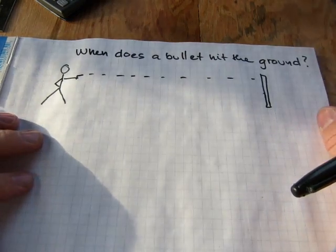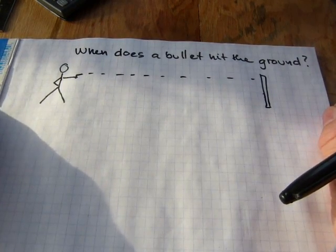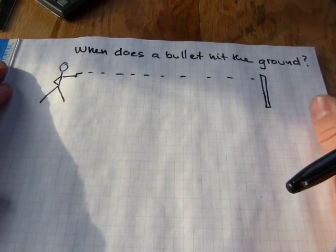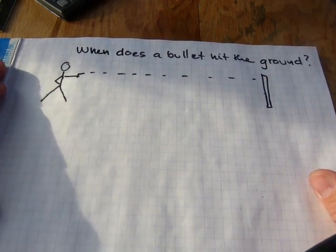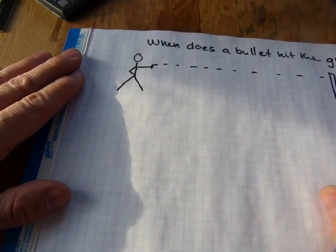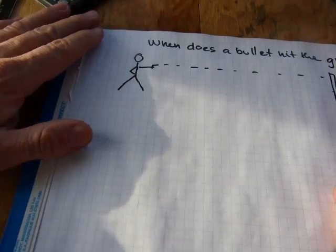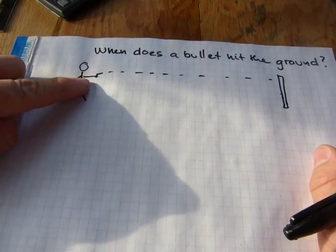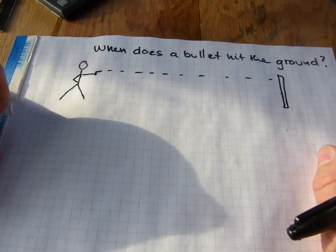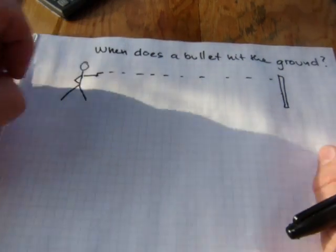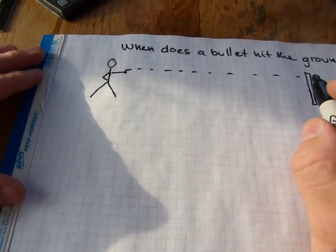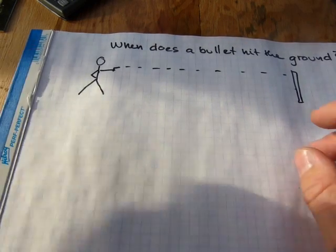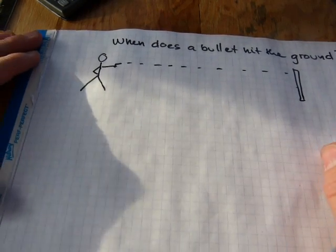Well, in your dreams. As soon as it leaves the barrel of the gun, or it works for an arrow as well, as soon as the arrow leaves the bowstring, it will start dropping down in a streak which is strictly proportionate to the gravitational pull of the earth.